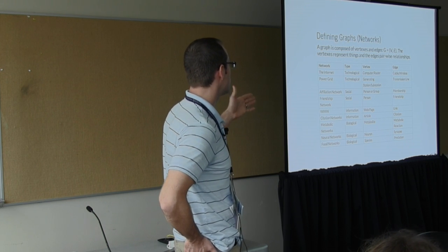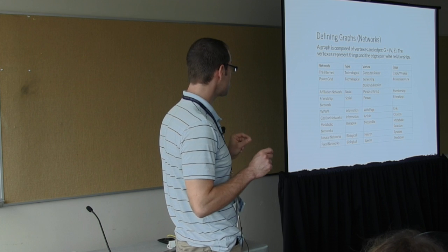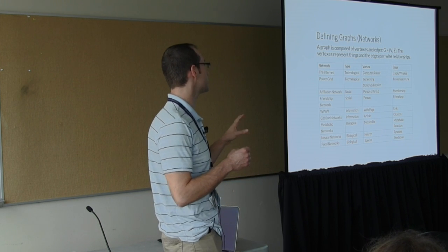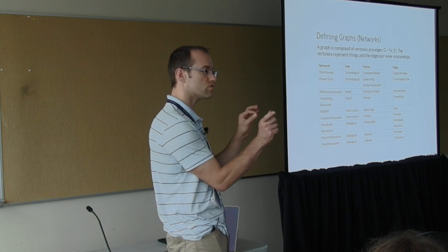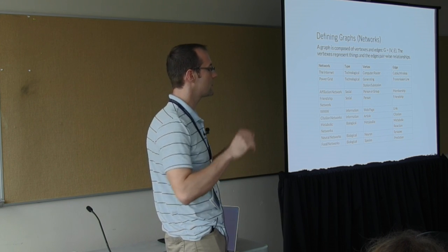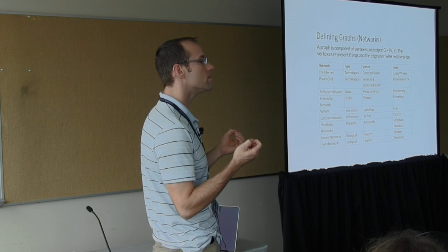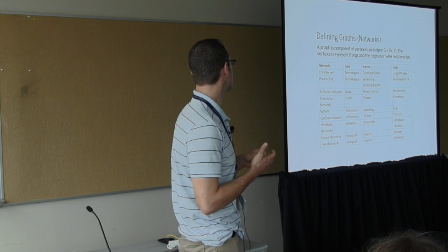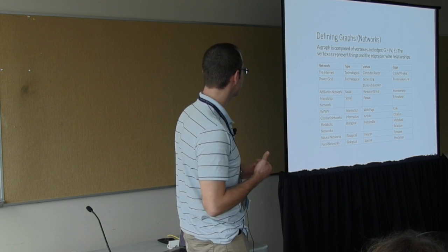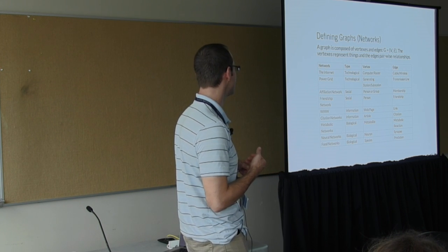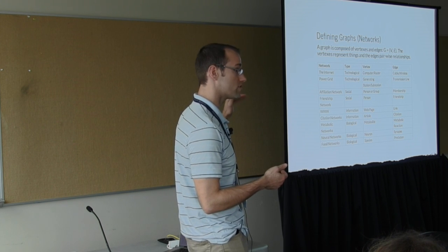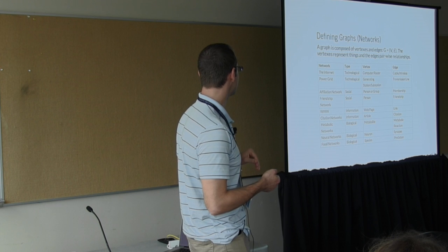A graph is composed of vertices and edges. The vertices represent things, and the edges are pairwise relationships between things. Relatively simple abstraction, but extremely applicable. I enumerate all the potential semantics behind vertices and edges for those networks that I just named.